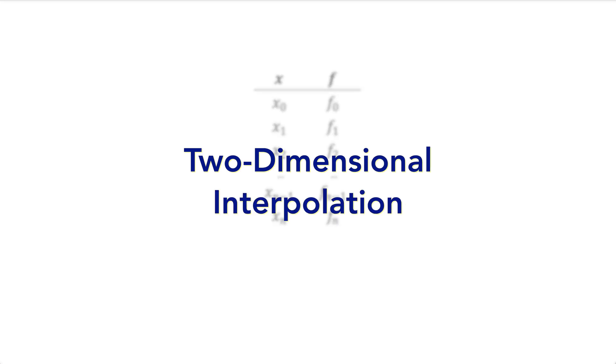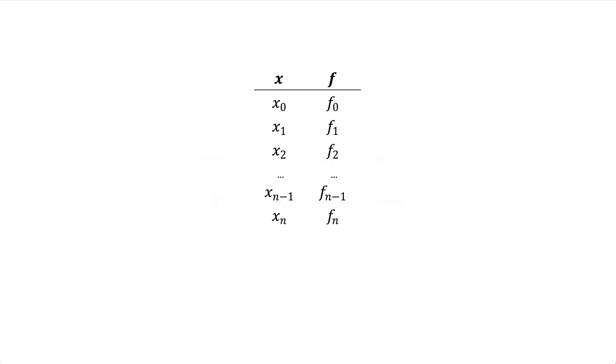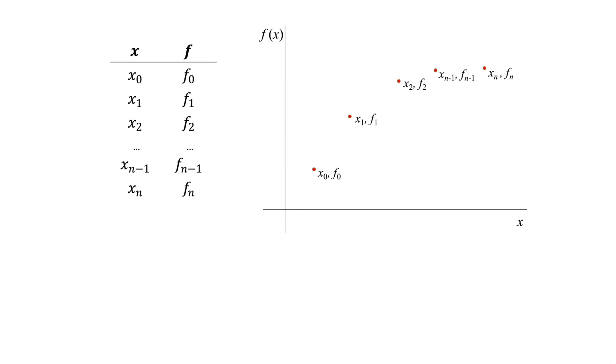Before speaking about two-dimensional interpolation, let's quickly review one-dimensional interpolation. Interpolation is used when we have a data set of x and f pairs. These pairs can be represented as points on a graph, and the interpolation polynomial generates a curve that passes through all given points.